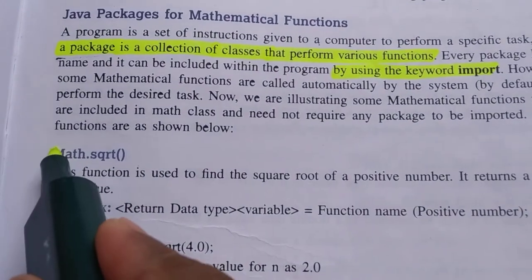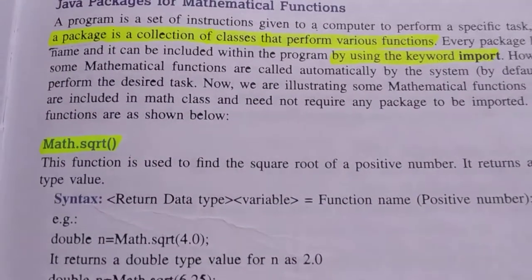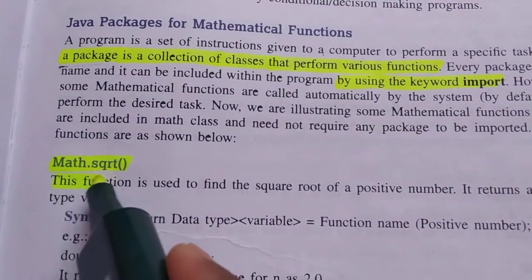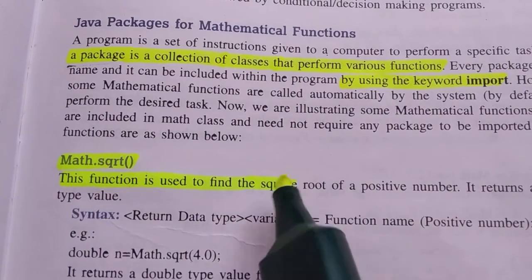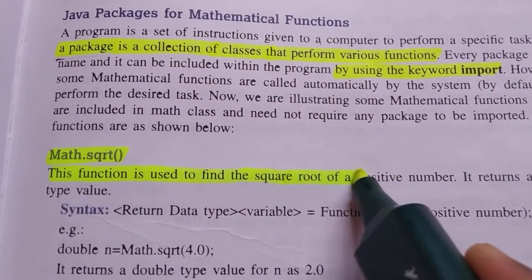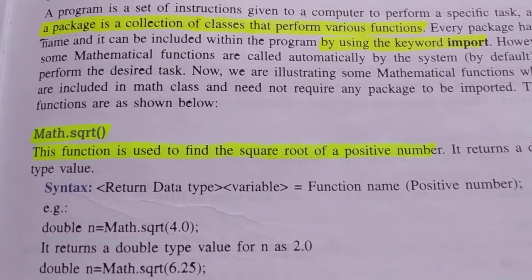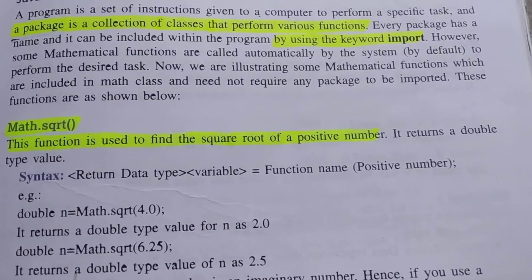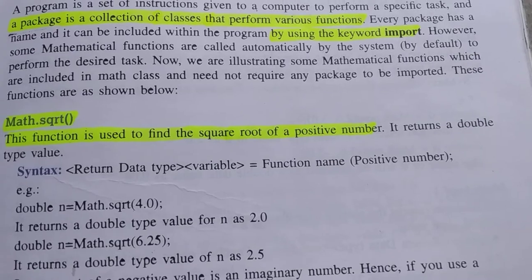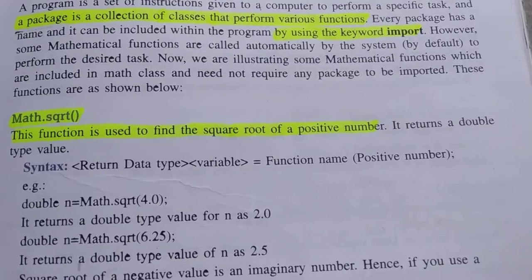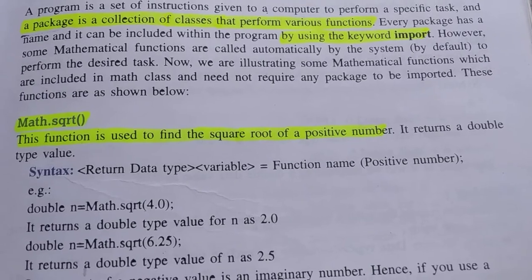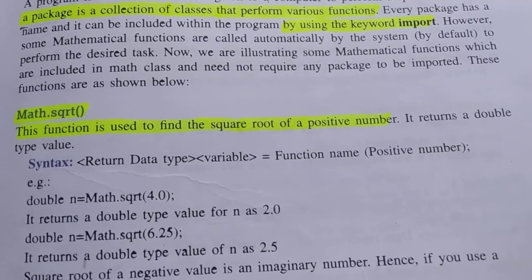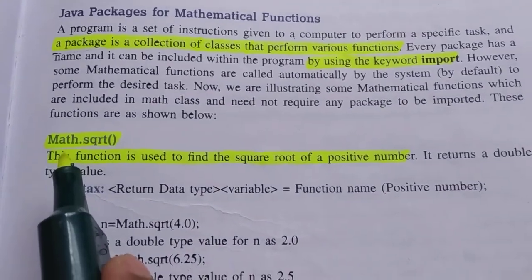Number one is Math.sqrt(). sqrt stands for square root. This function is used to find the square root of any positive number. For example, if we want to find the square root of 144, we can write this in our programming language using Math.sqrt().